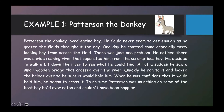Patterson the Donkey. Patterson the donkey loved eating hay. He could never seem to get enough as he grazed the fields throughout the day. One day, he spotted some especially tasty looking hay from across the field. There was just one problem — he noticed there was a wide rushing river that separated him from the scrumptious hay. He decided to walk a bit down the river to see what he could find. All of a sudden, he saw a small wooden bridge that crossed over the river. Quickly, he ran to it and looked the bridge over to be sure it would hold him. When he was confident that it would hold him, he began to cross it. In no time, Patterson was munching on some of the best hay he'd ever eaten and couldn't have been happier.